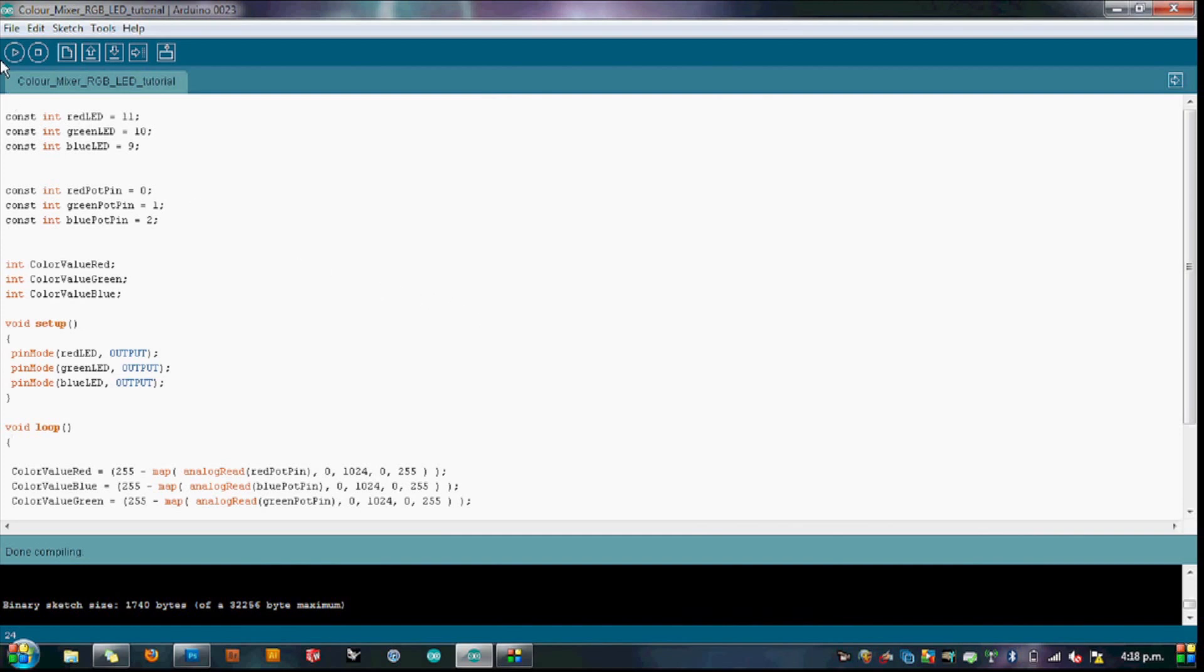First off we click compile to double check there are no mistakes and everything will run smoothly. Now all we do is connect the Arduino with the computer via the USB cable and click upload. Wait until it says done uploading. Now let's check it out and have a play.